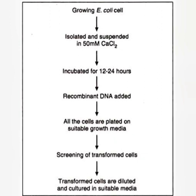Transfection involves the introduction of recombinant DNA packaged as virions. Vectors that have cos sequences — such as cosmids, phagemids, and lambda phage vectors — are packaged in vitro into empty phage heads. This packaging process produces complete lambda particles containing the recombinant DNA.